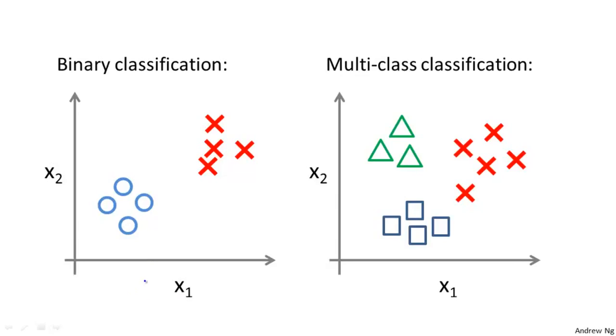So the question is, given a data set with three classes, where this is an example of one class, that's an example of a different class, and that's an example of yet a third class, how do we get a learning algorithm to work for this setting?